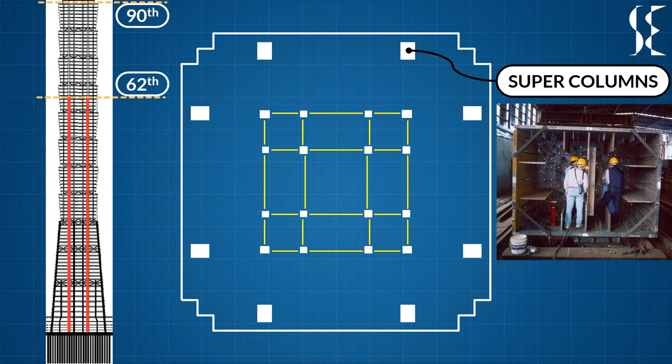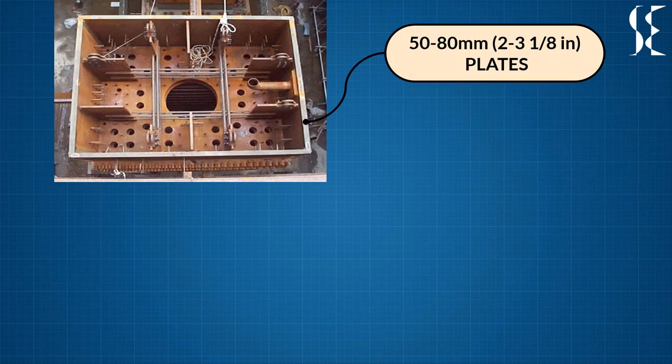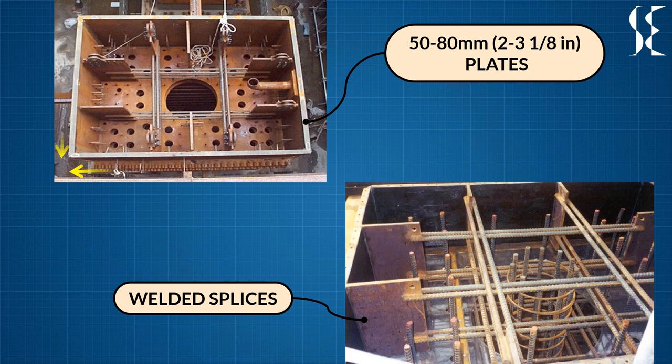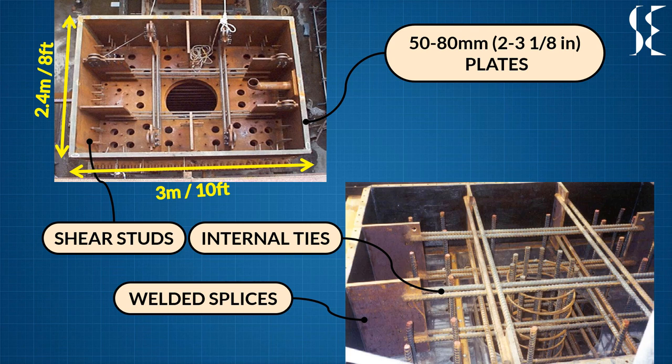The interstory drift and overall lateral motion were limited to height by 200. Super columns were built from 50 to 80 mm thick steel plates with welded splices. Highest dimensions of the columns are at 3 m by 2.4 m and vary along the height of the building. Internal cross ties resist bulging of the column. Shear studs link concrete and steel together and rebar strengthen the concrete.